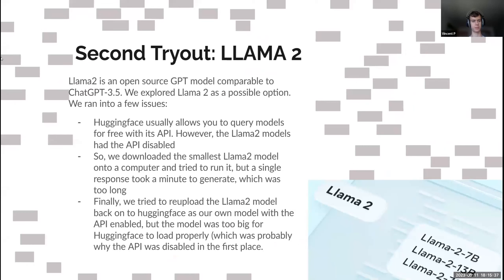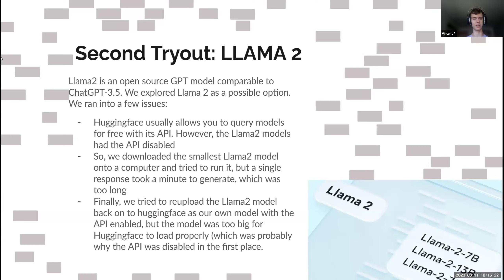Our second attempt: we tried to use Llama 2. If you've been paying attention to AI news, Llama 2 is an open-source AI model comparable to ChatGPT — meaning you can download it onto your computer and use it. We first tried it on Hugging Face, but the Hugging Face API was disabled. Then we tried downloading the model locally, but generating a response took about a minute — way too long. Finally, we tried re-uploading the Llama 2 model as our own to enable the Hugging Face API, but the model was just too big. So we had to cut the Llama 2 idea.